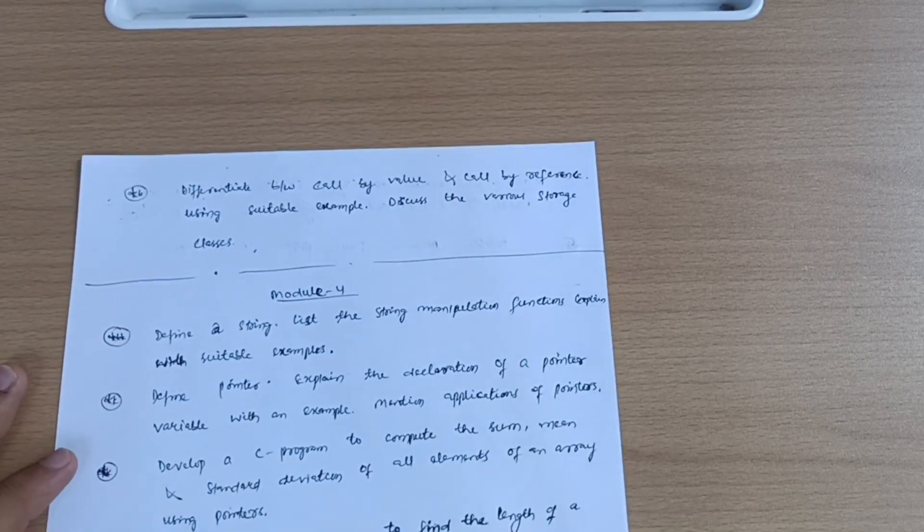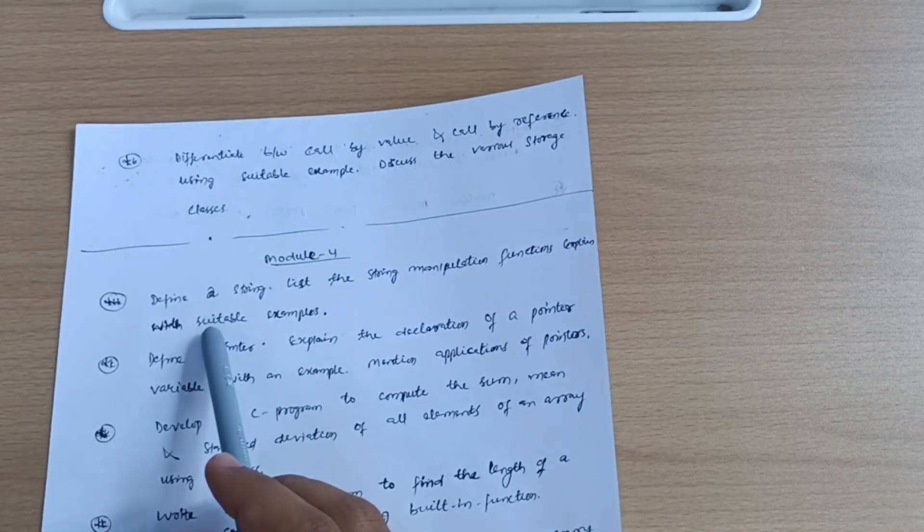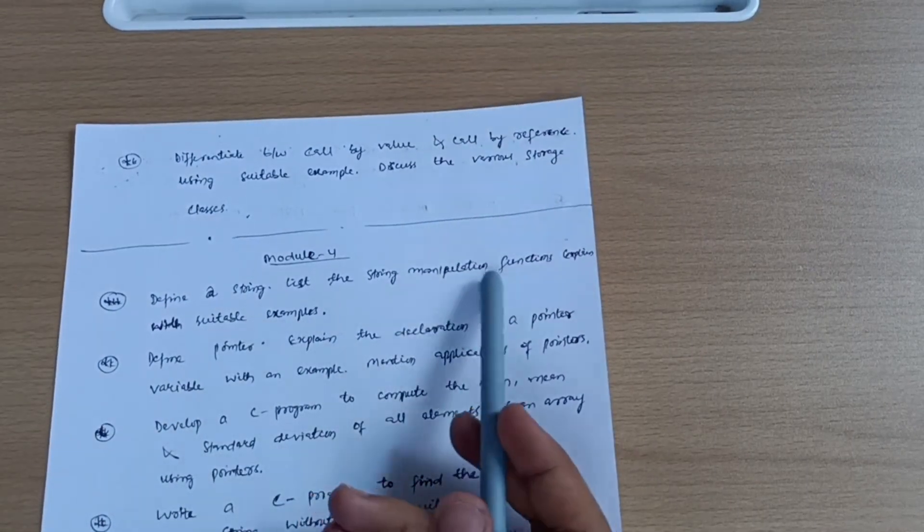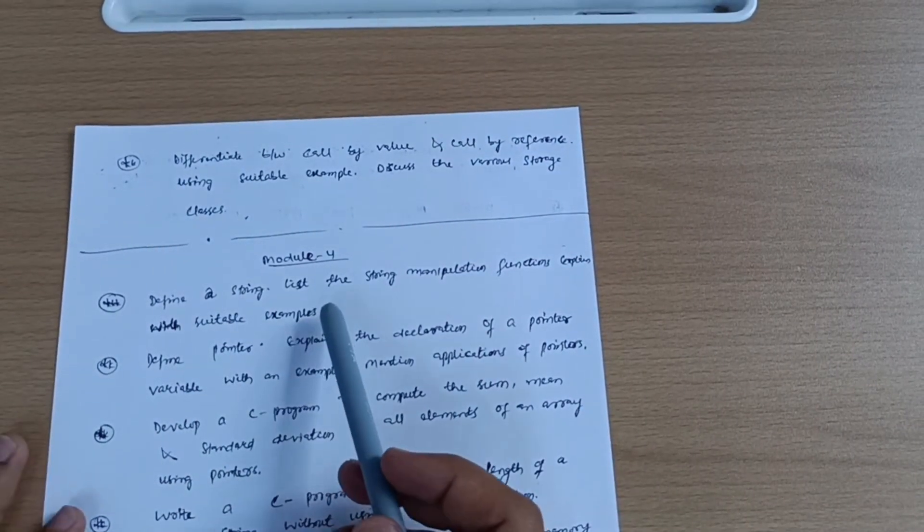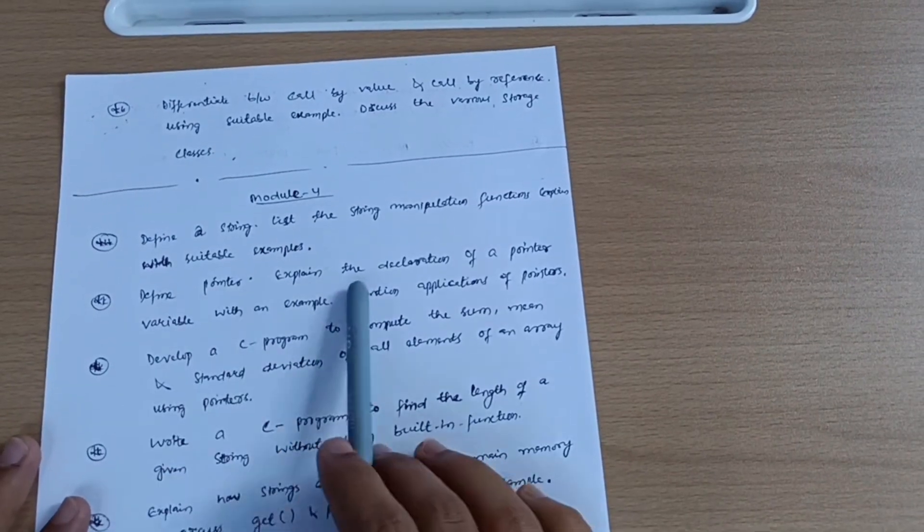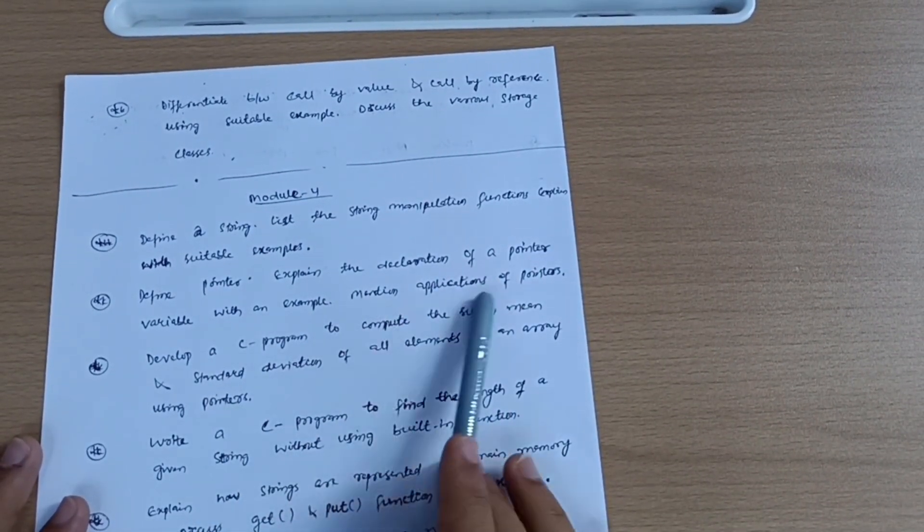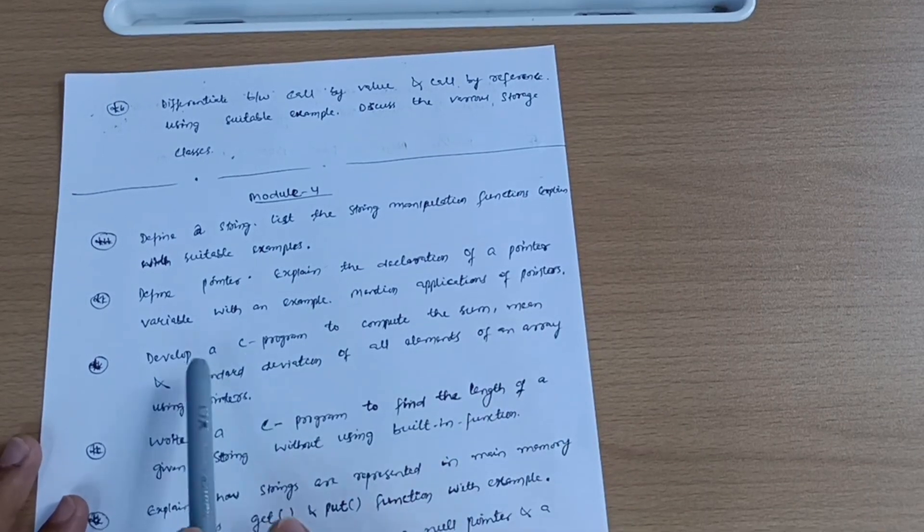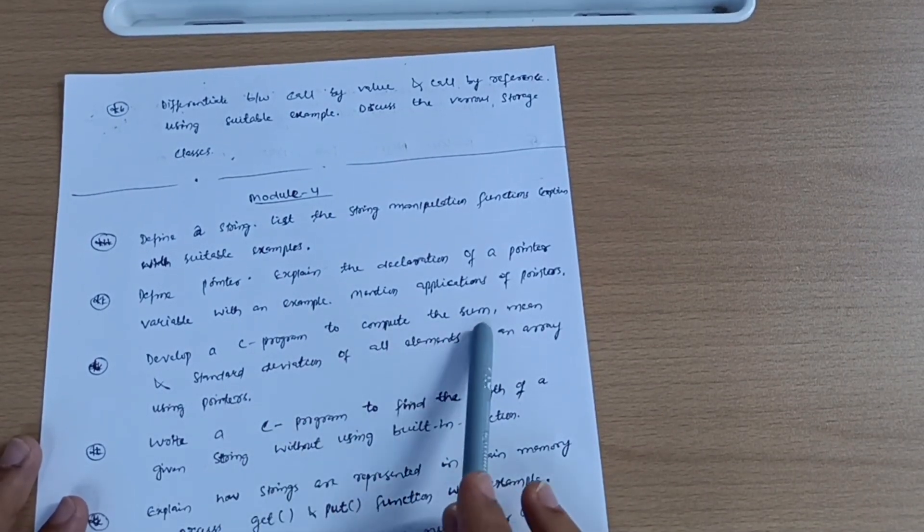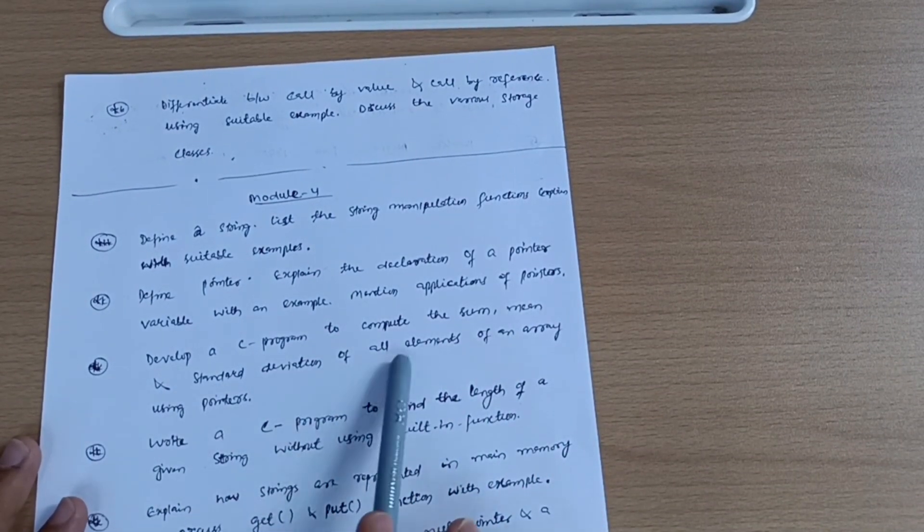If I talk about module four, I have taken six important questions which you have to go through like: define a string, list the string manipulation functions, explain with suitable examples. Define pointer and explain the declaration of a pointer variable with example. Mention applications of pointers and develop a C program to compute the sum, mean, and standard deviation of all elements of an array using pointers - again an important one.